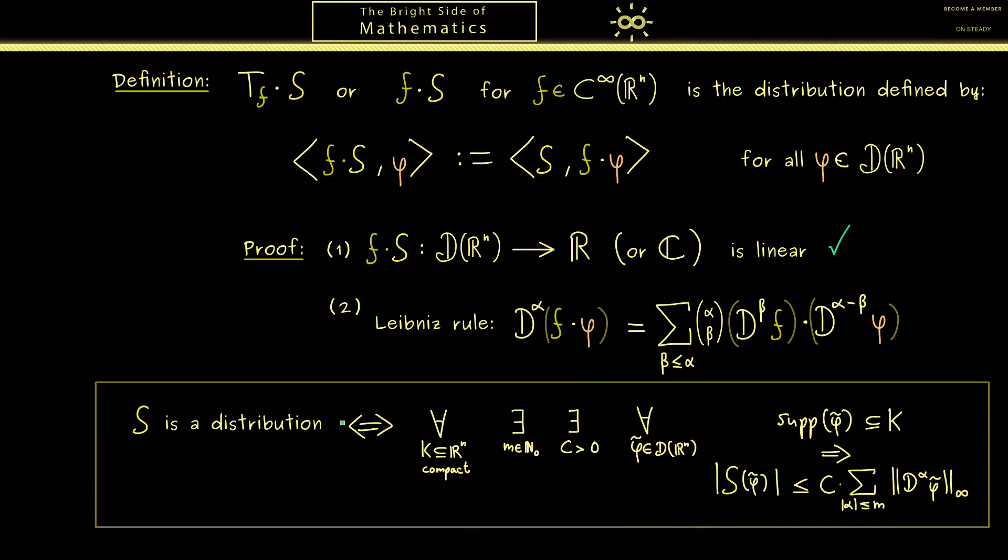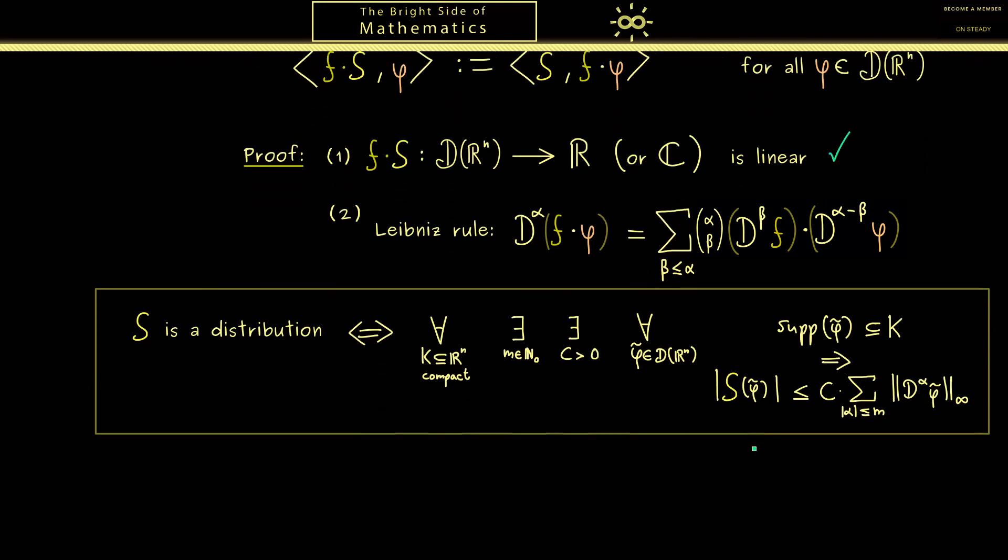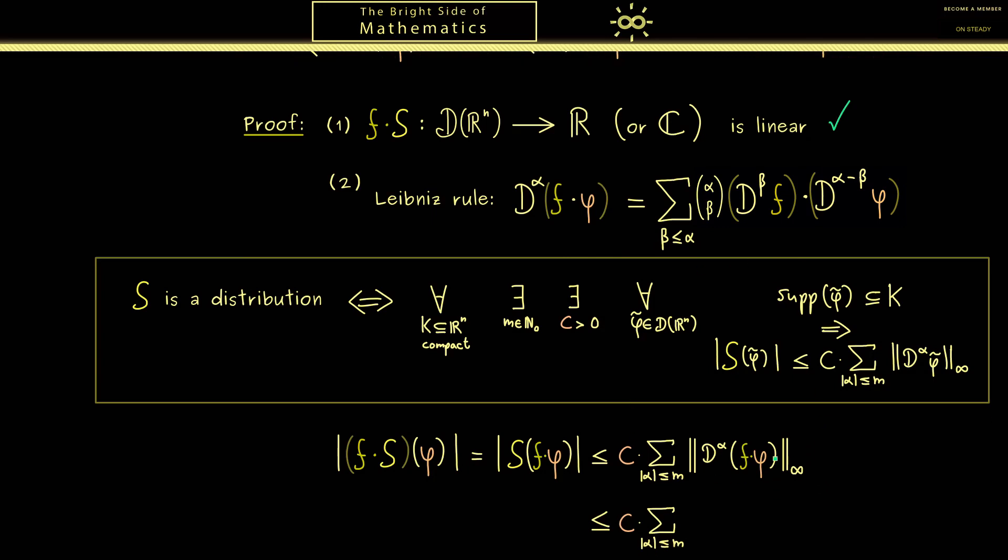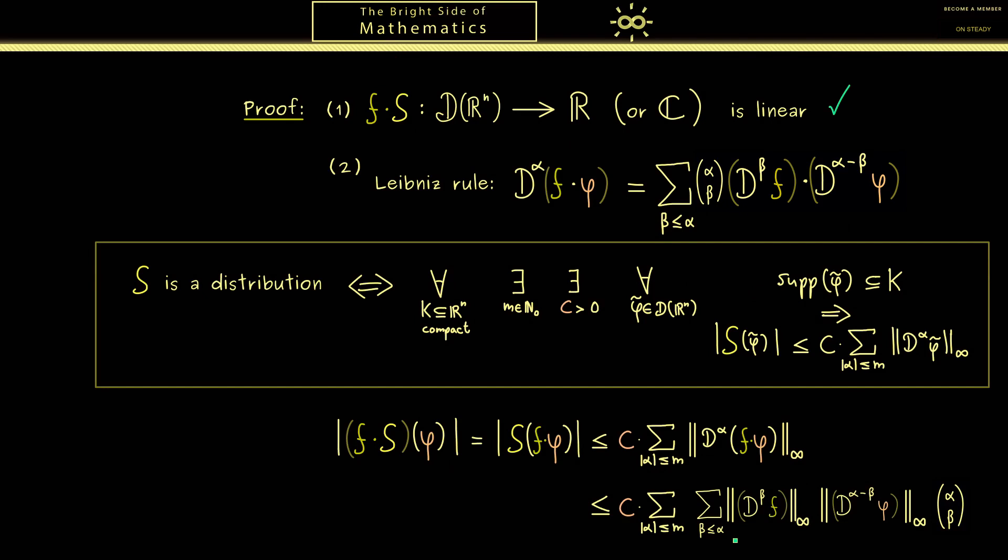Hence now we consider here the absolute value of f times S of φ. Now by definition we know this is simply the absolute value of the distribution S applied to the function f times φ. Therefore at this point we can use the inequality we already have for S. The only difference from before is instead of φ tilde we now have f times φ. OK, and there you see for this part we can apply our Leibniz rule. And then the supremum norm we can just pull into the finite sum. OK, so this is the result now and maybe you already see the overall idea here.